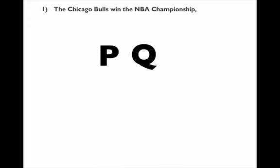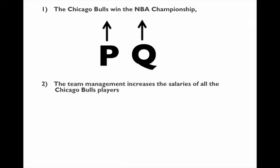Let's analyze one thing at a time. What is the effect on price and quantity of the Chicago Bulls winning the NBA championship? Well, people are going to want to see more Chicago Bulls games, so that's going to increase competition for tickets. That increases the price and also increases the quantity.